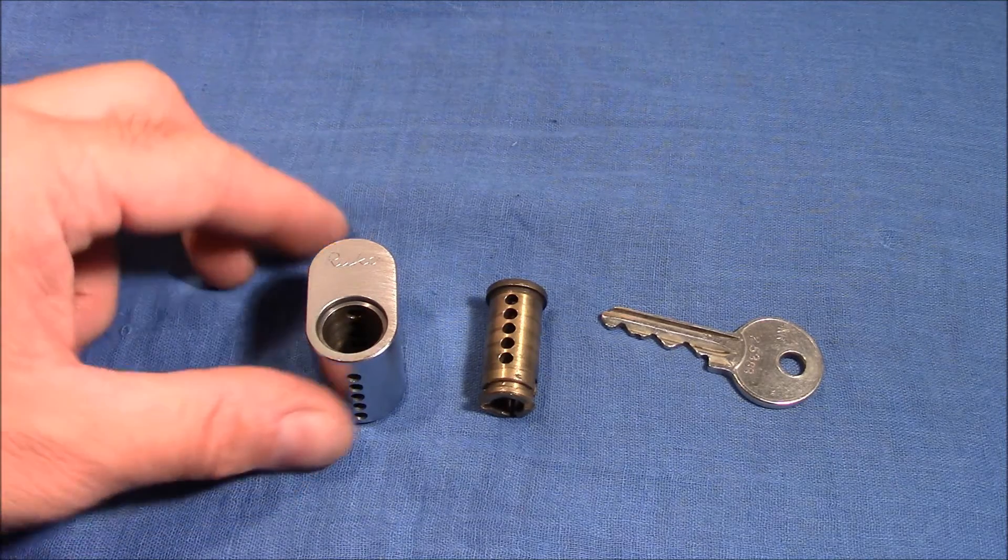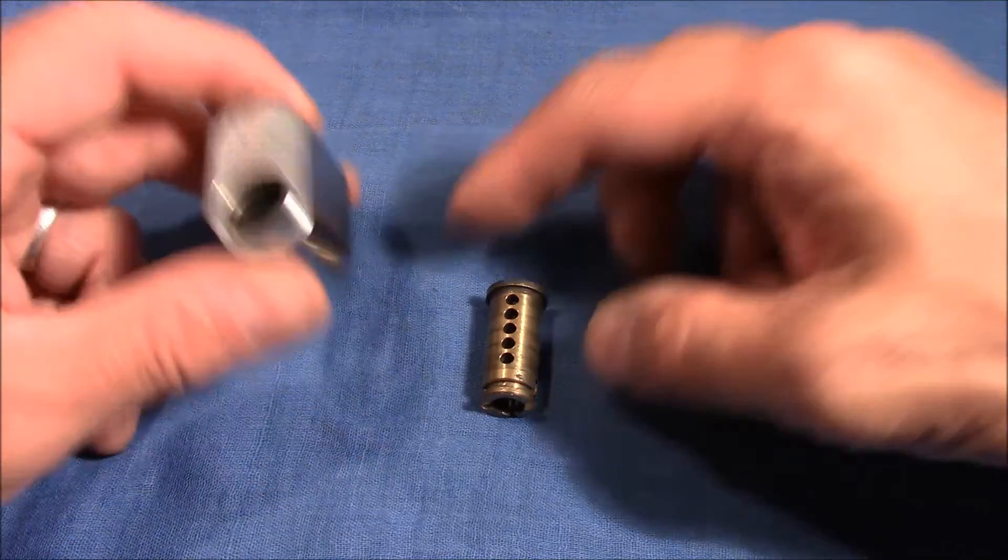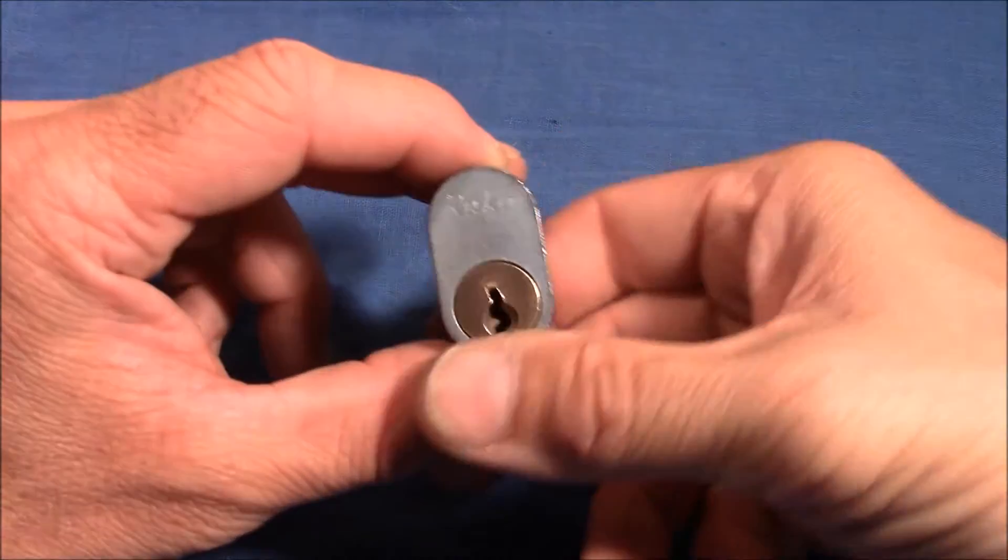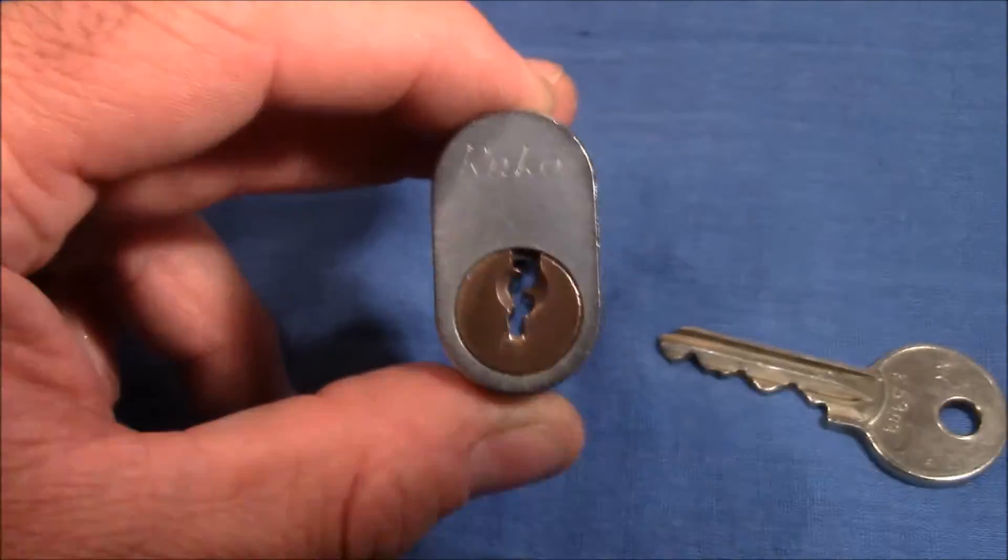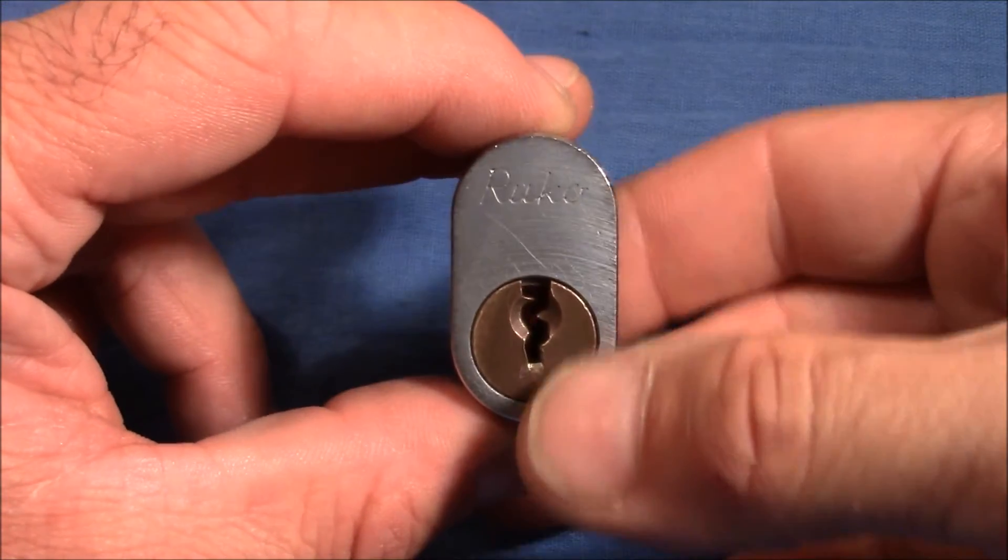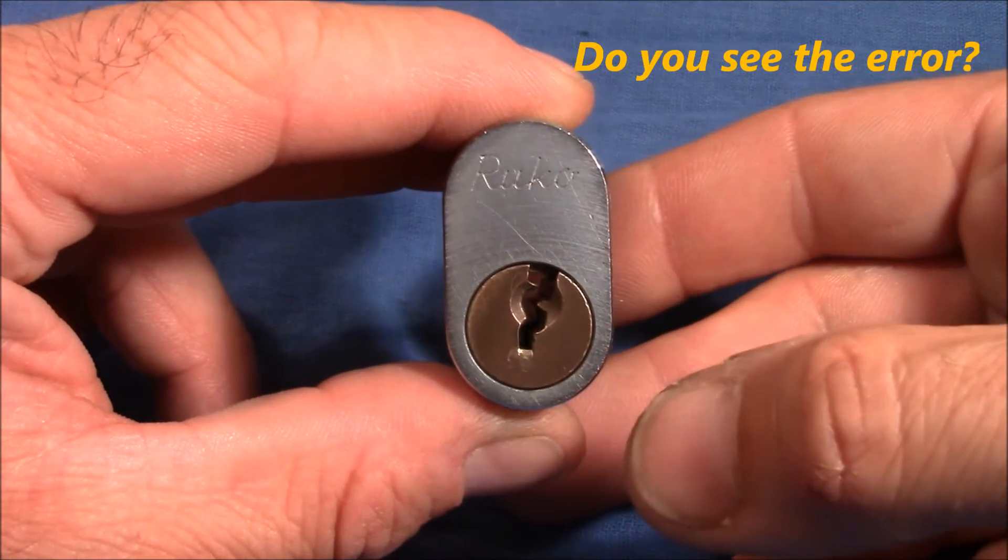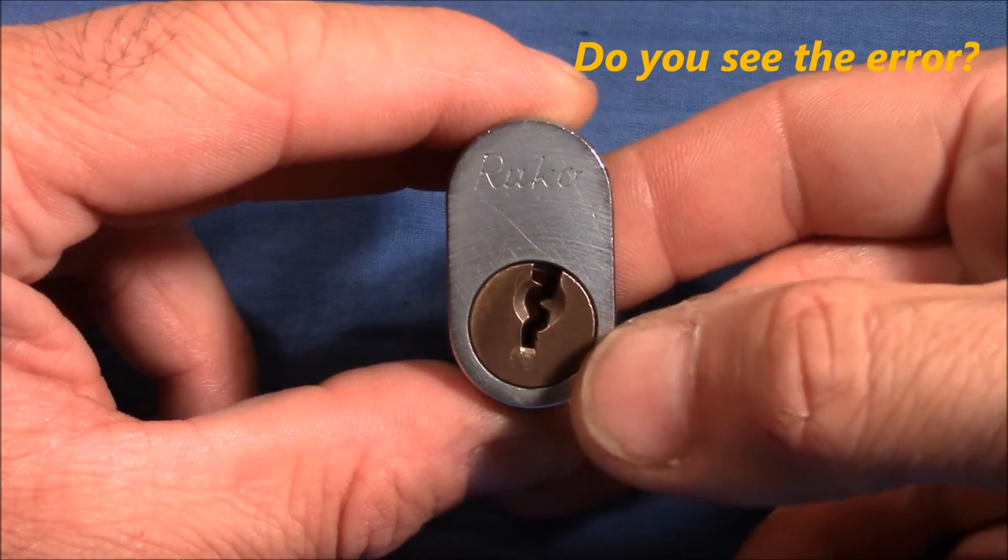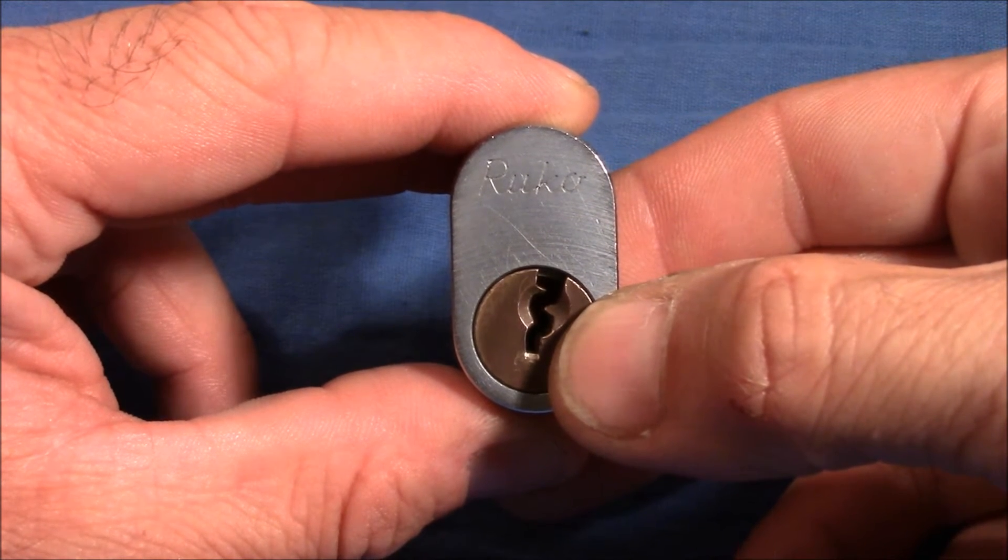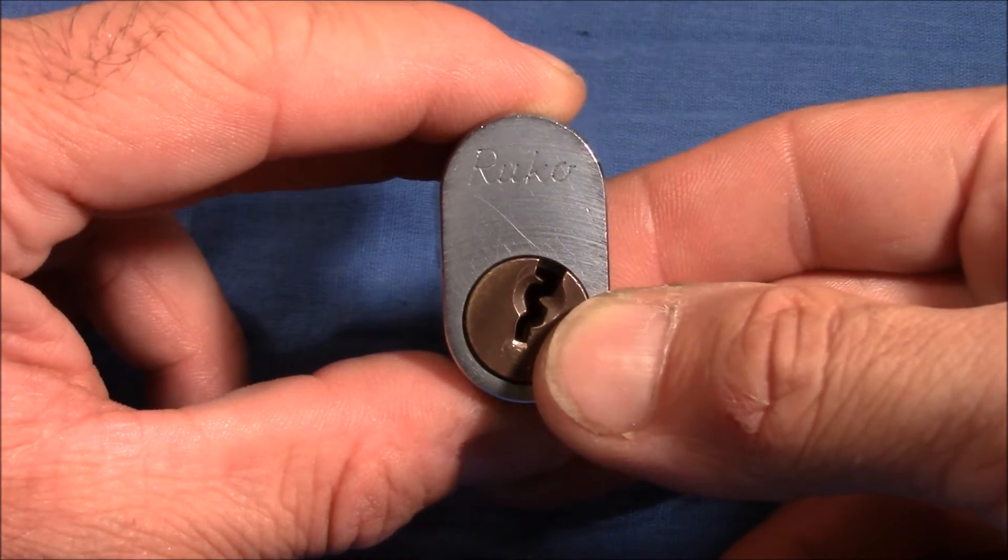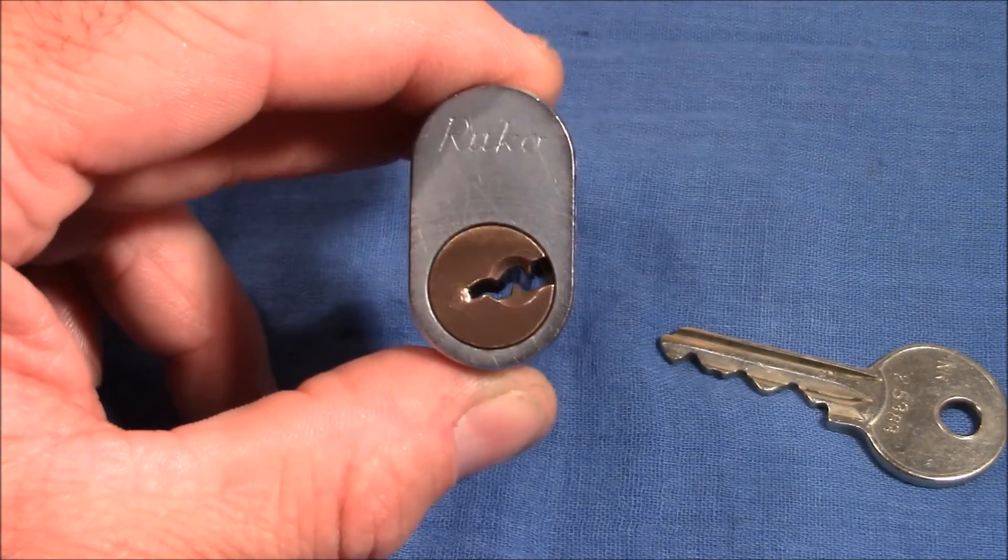Perhaps you have seen me picking this Ruku overcylinder in one of my recent videos, and I was surprised because when you pick it, it goes like that. So this is the neutral position, then you pick it and then it turns a little bit, almost like a false set when spools are involved, but you do not get any counter rotation. It just turns a little bit more, turns a little bit more and suddenly it opens. So this was a big surprise for me.